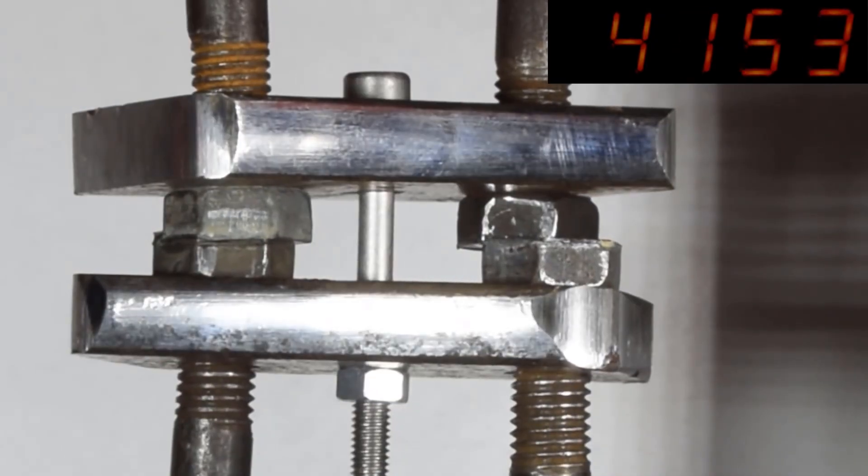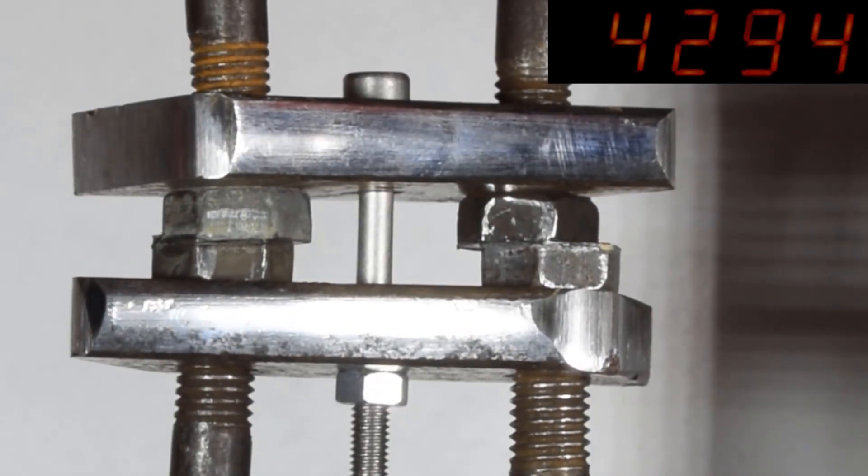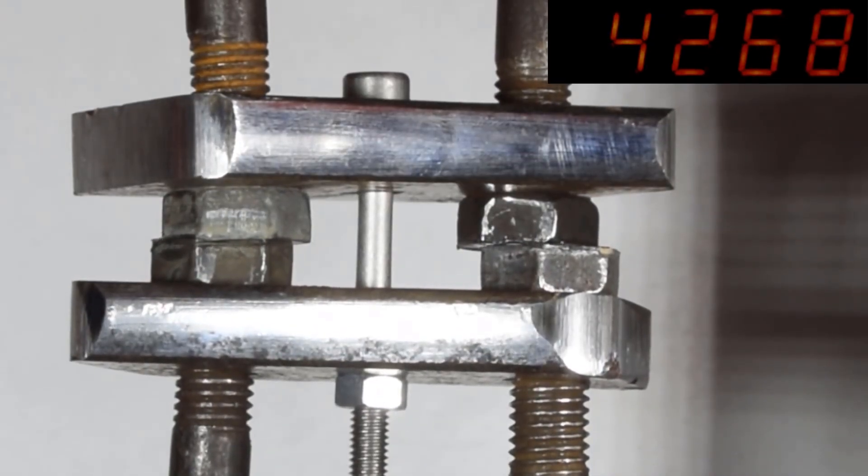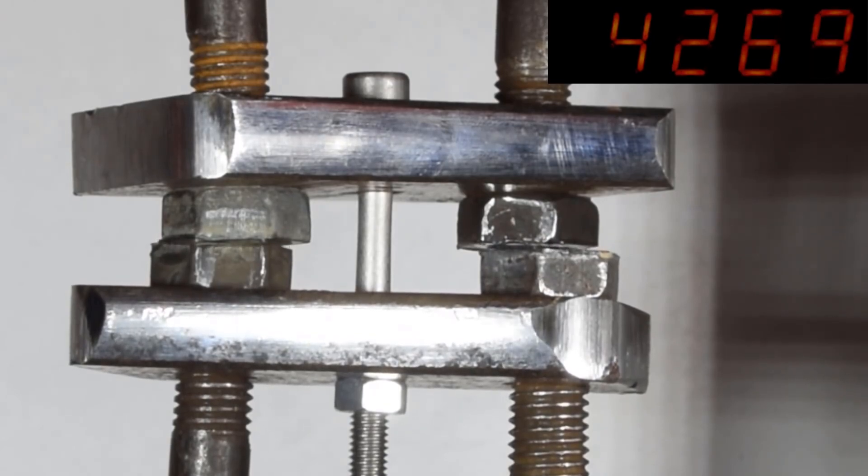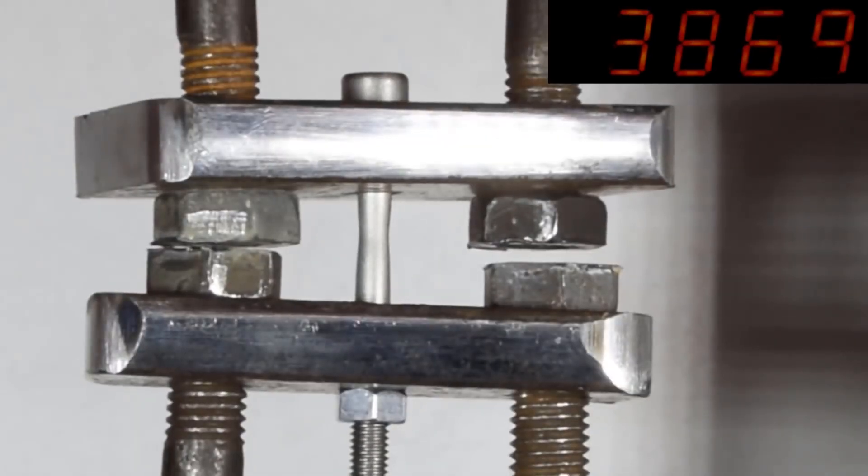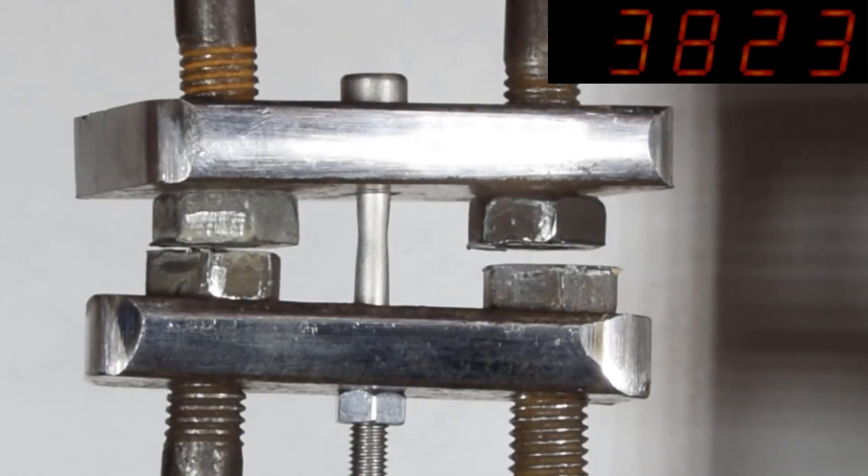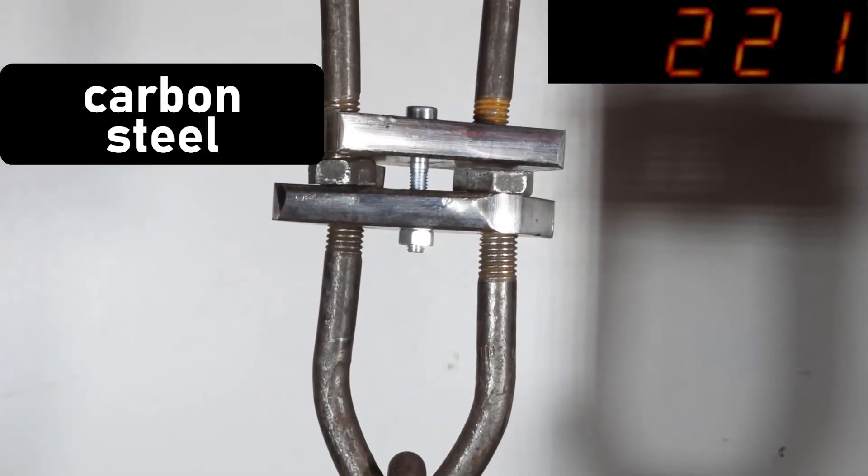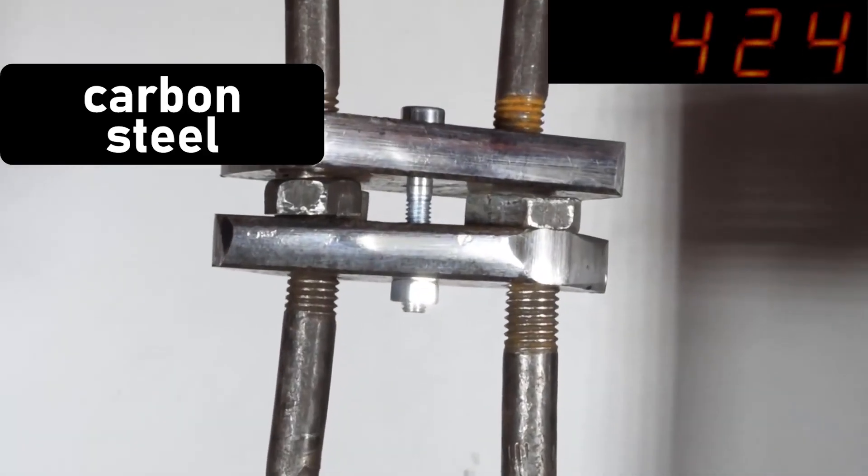In this case we can observe what's called the flow stress. Specifically with stainless steel, when the flow stress is reached, further load doesn't decrease significantly. Carbon steel also possesses flow stress capacity, but it's not as pronounced as with stainless steel.